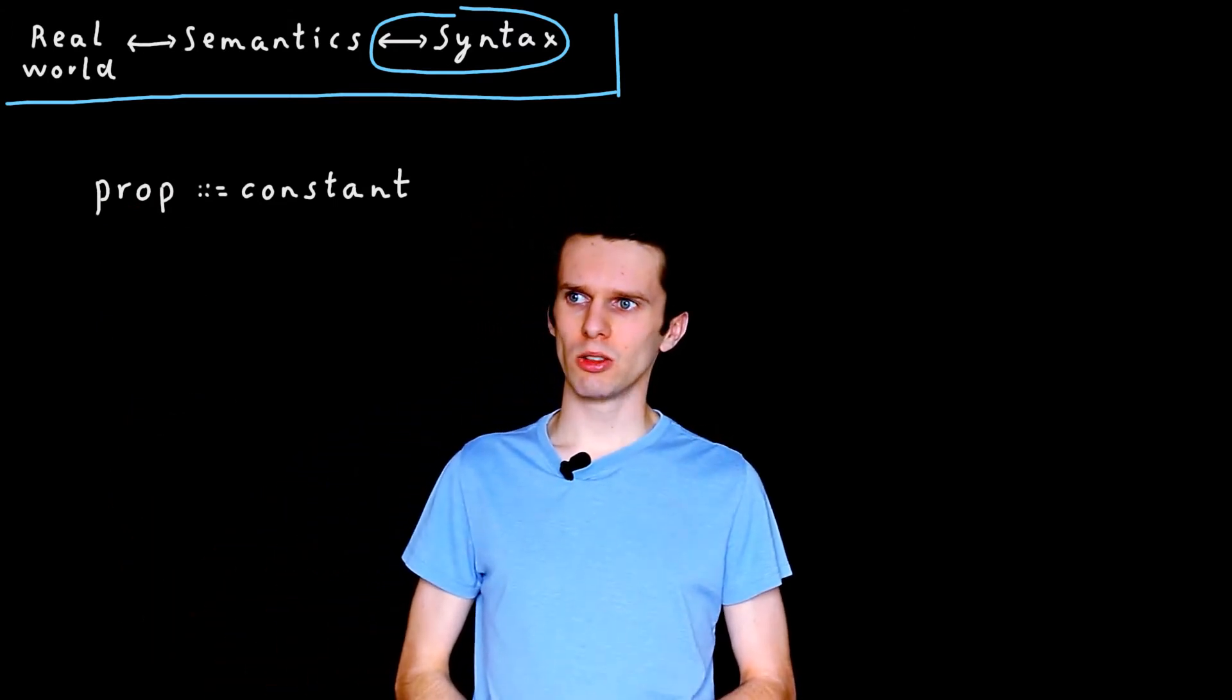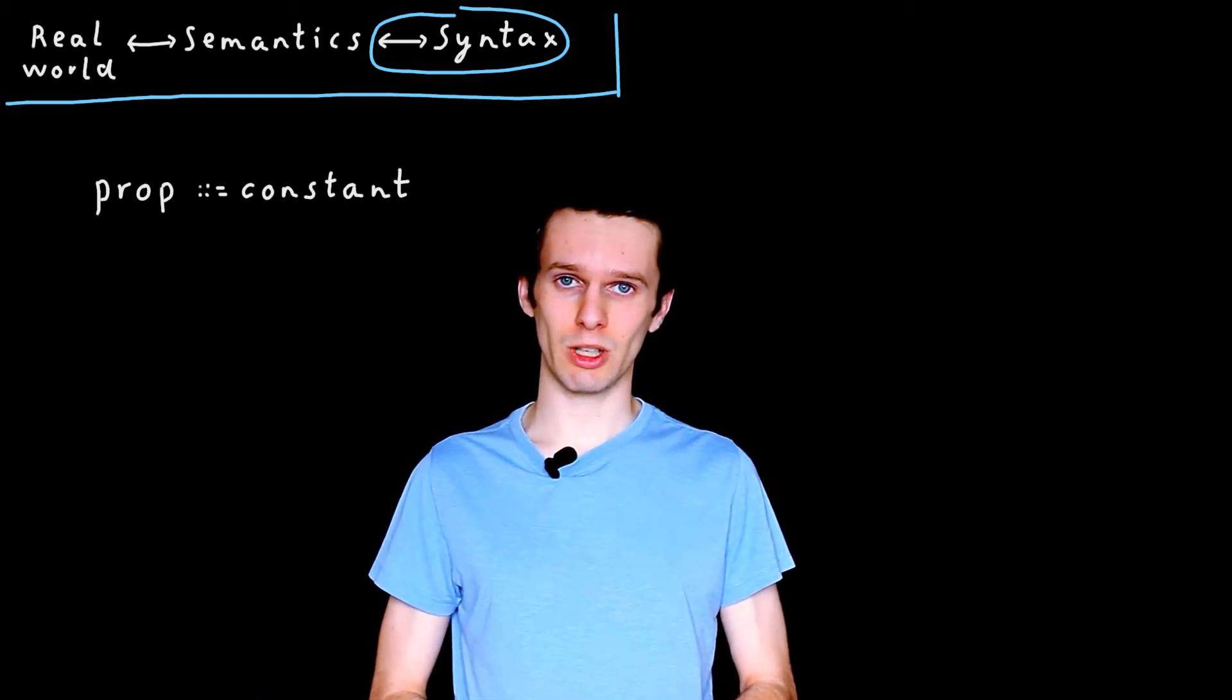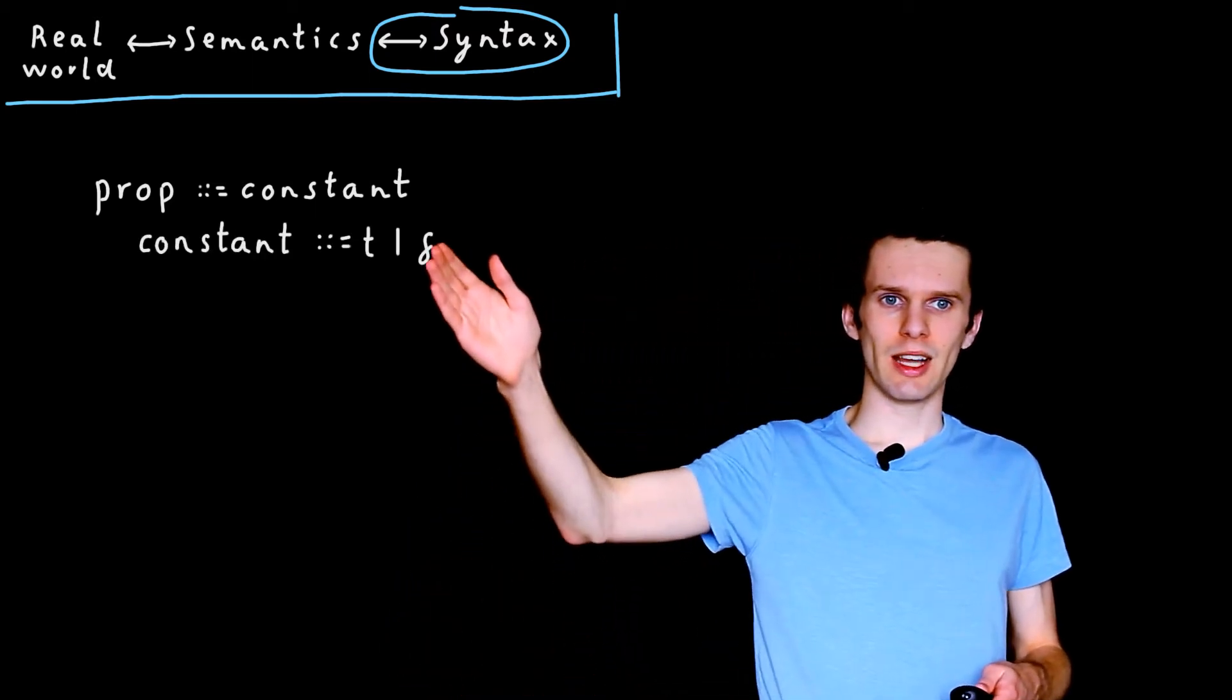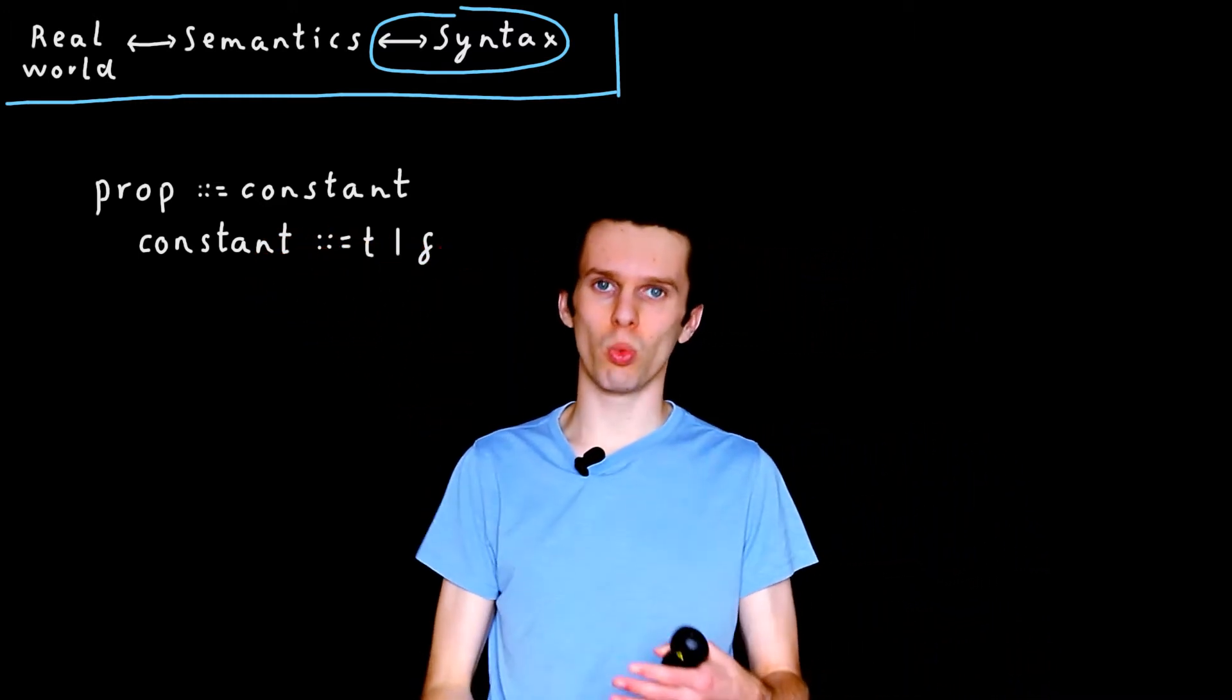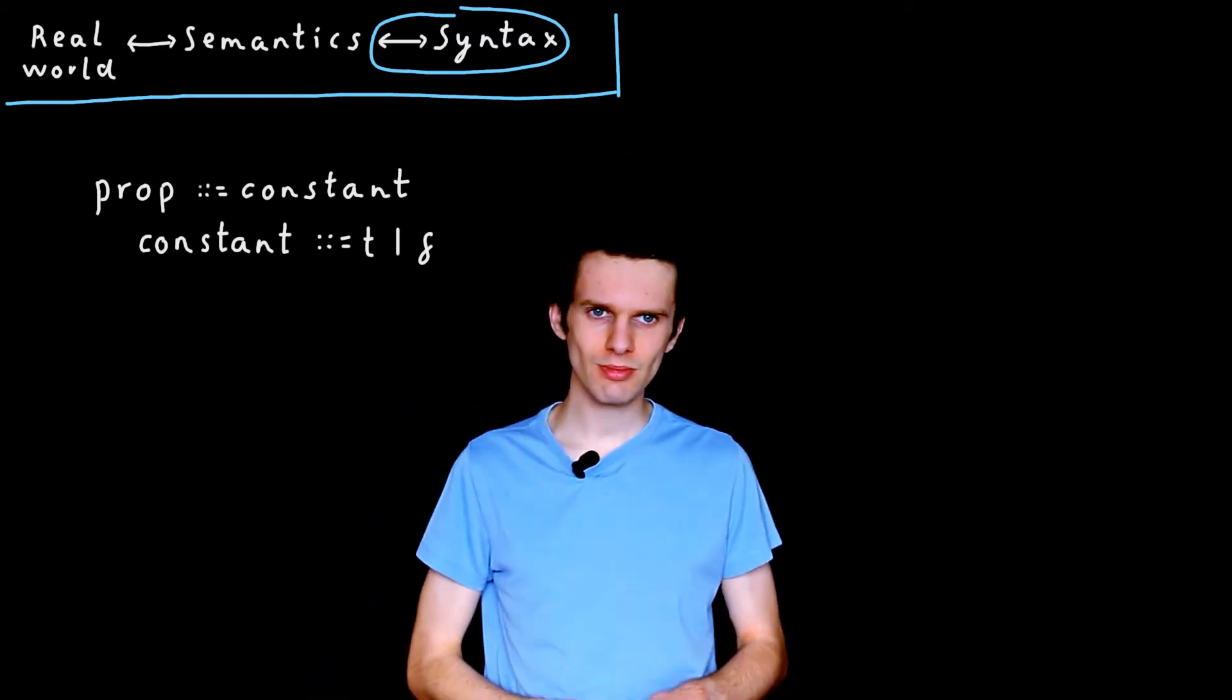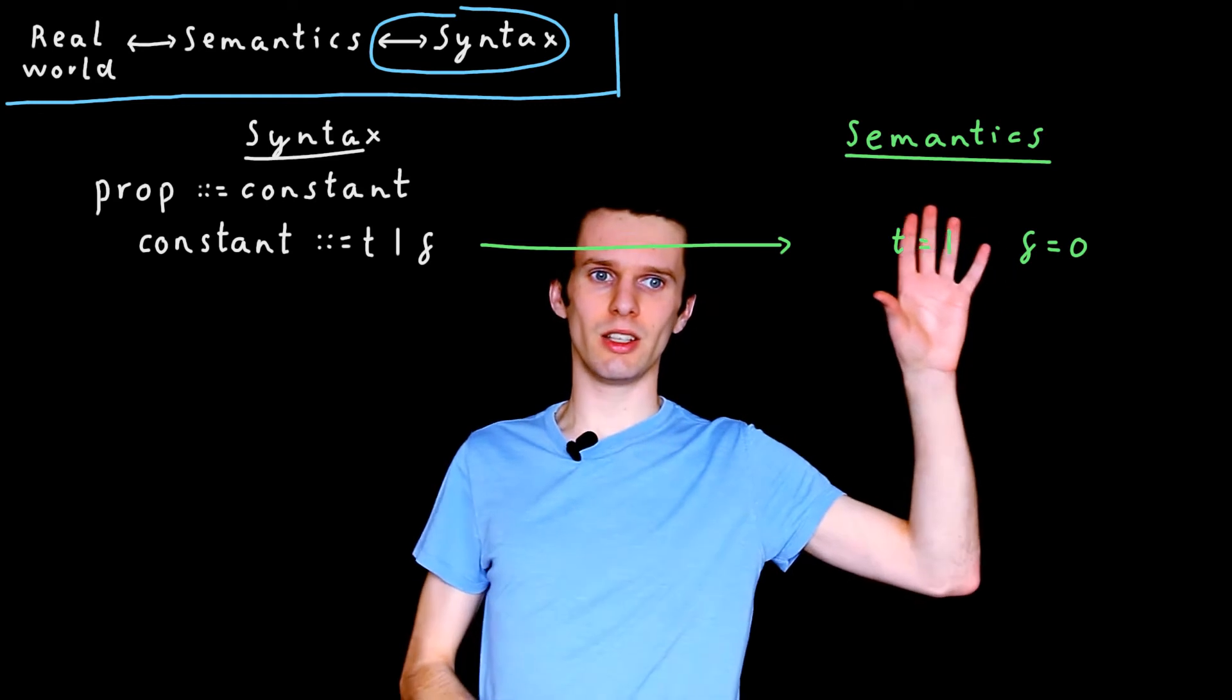And the first thing we think is, well, propositional logic is all about representing things that are either true or false. So it makes sense to be able to write down things that represent true and false. And we say these things are called constants. So what is a constant? A constant can be either the letter T or it can be the letter F. And this notation we're using is convention and it's quite widely accepted. So a proposition is a constant. And this little bar in between the T and the F means or.